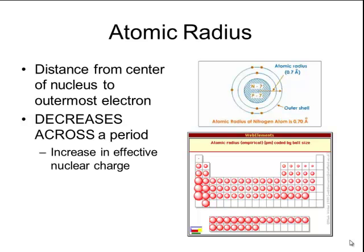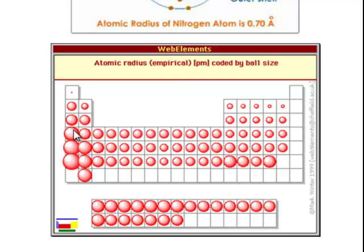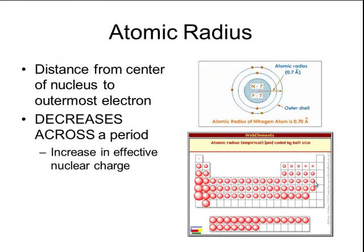As you move across the period, the atomic radius decreases. You can see in the picture that the elements on the left-hand side are bigger, and as you move across to the right, those elements get smaller. Each of those little pink spheres represents the overall radius, or size, of each atom. The reason atoms decrease in size is because of an increase in effective nuclear charge.